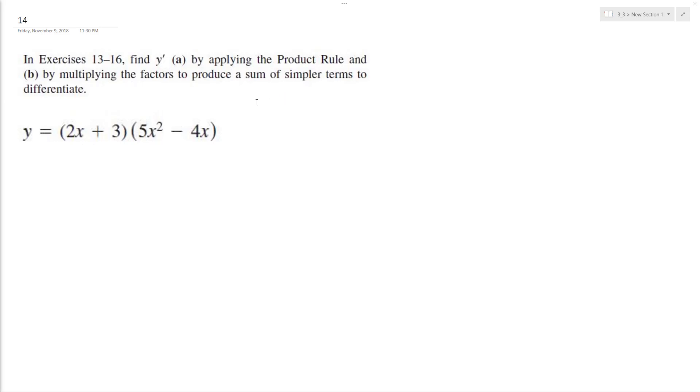So starting off part A, using the product rule. Taking the derivative of the first part, I get 2, and then quantity times quantity 5x squared minus 4x plus quantity 2x plus 3 times the derivative over here, which is going to be 10x minus 4.